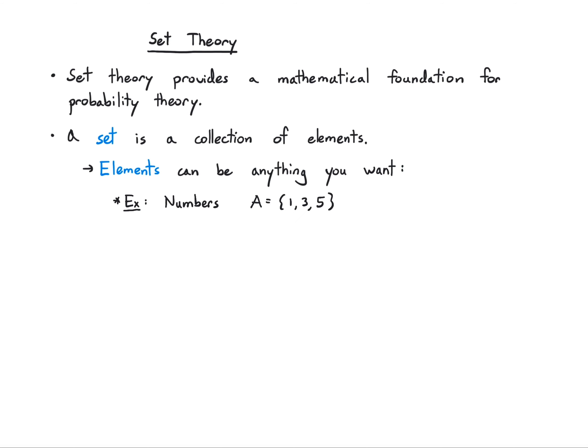Or I could have an infinite list — so maybe 1, 3, 5, 7, and so on. Or maybe I have an interval of real numbers. So maybe I have the interval from minus 2.32 to 1.45, and it's open on the right side. So there are lots of different possibilities for sets of numbers.